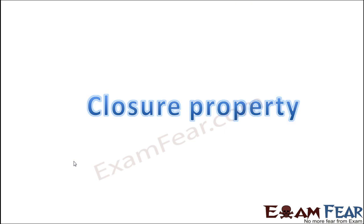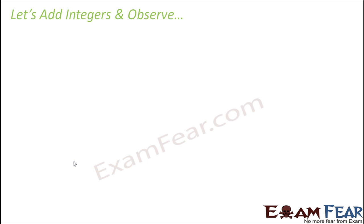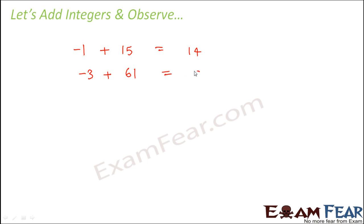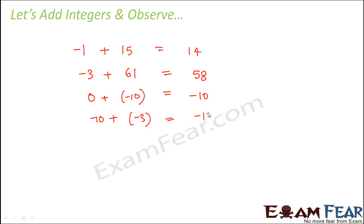Let's start with closure property. What is closure property? It talks about what happens when we add integers — do we always get integers, or sometimes get numbers which are not integers? Let us add and see. Let's randomly pick any integer. Minus 1 plus 15 gives 14. Minus 3 plus 61 gives 58. 0 plus minus 10 gives minus 10. Minus 10 plus minus 3 gives minus 13.